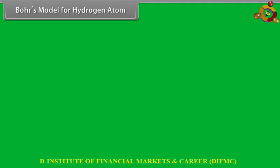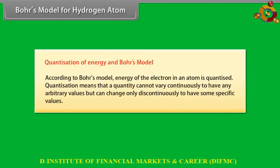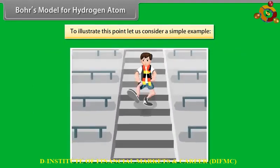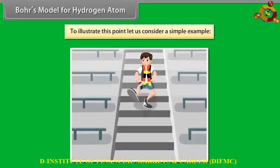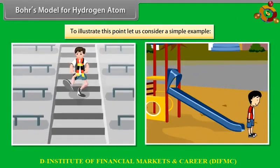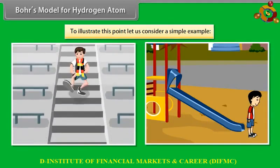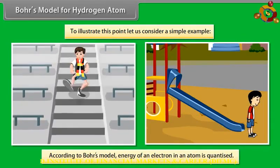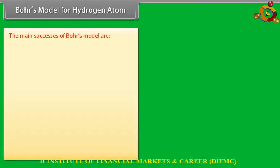Quantization of energy and Bohr's model: According to Bohr's model, energy of the electron in an atom is quantized — meaning it cannot vary continuously but changes only discontinuously to specific values. To illustrate: a person moving down a staircase has energy that changes discontinuously, taking only definite values at each step — energy is quantized. In contrast, a person moving down a ramp has continuously varying energy — not quantized. Similarly, according to Bohr's model, energy of an electron in an atom is quantized.